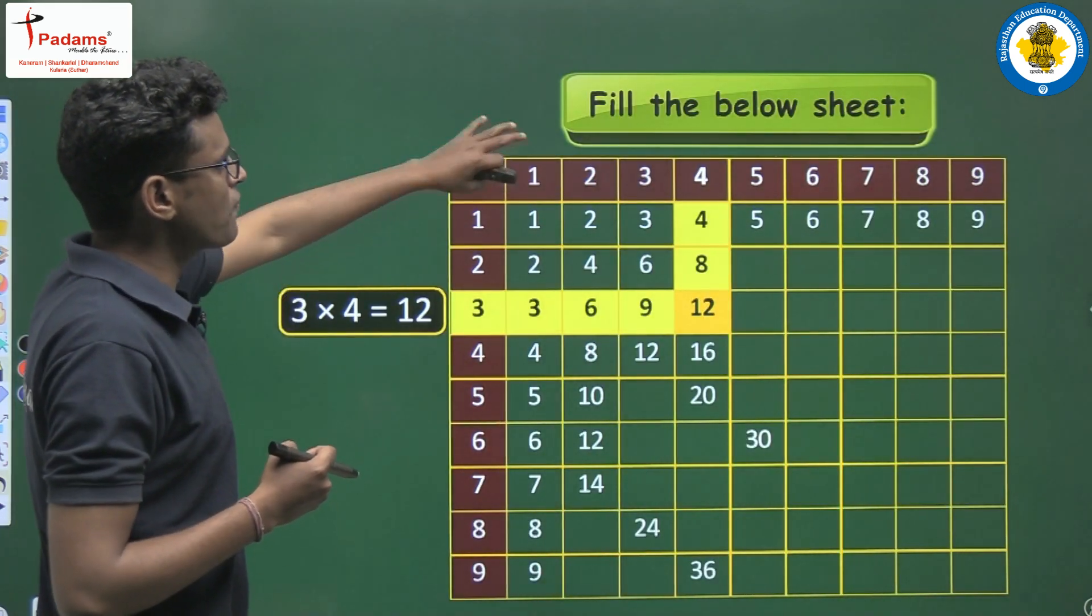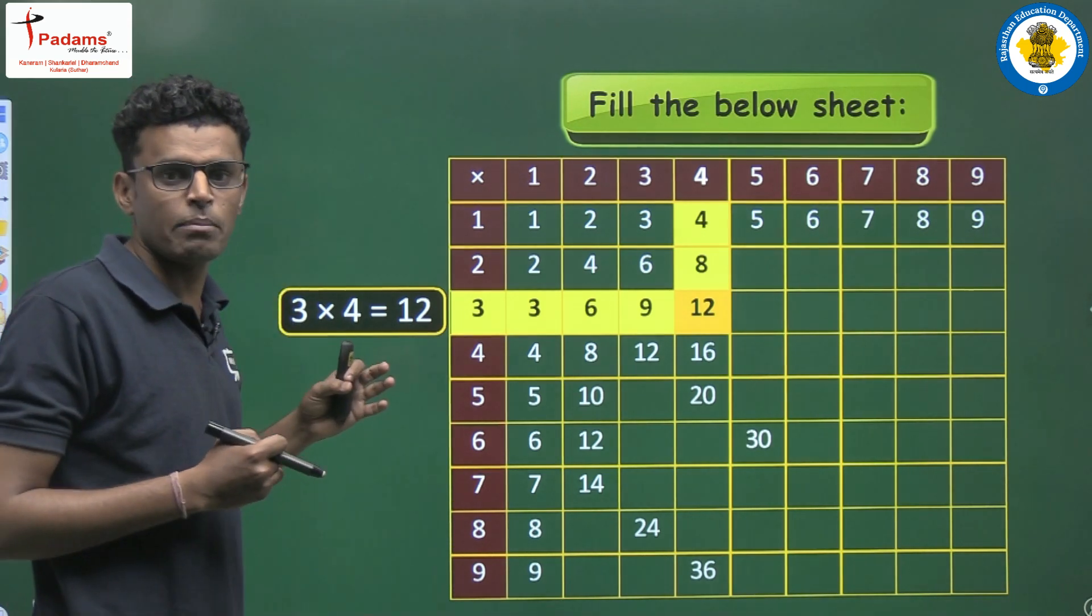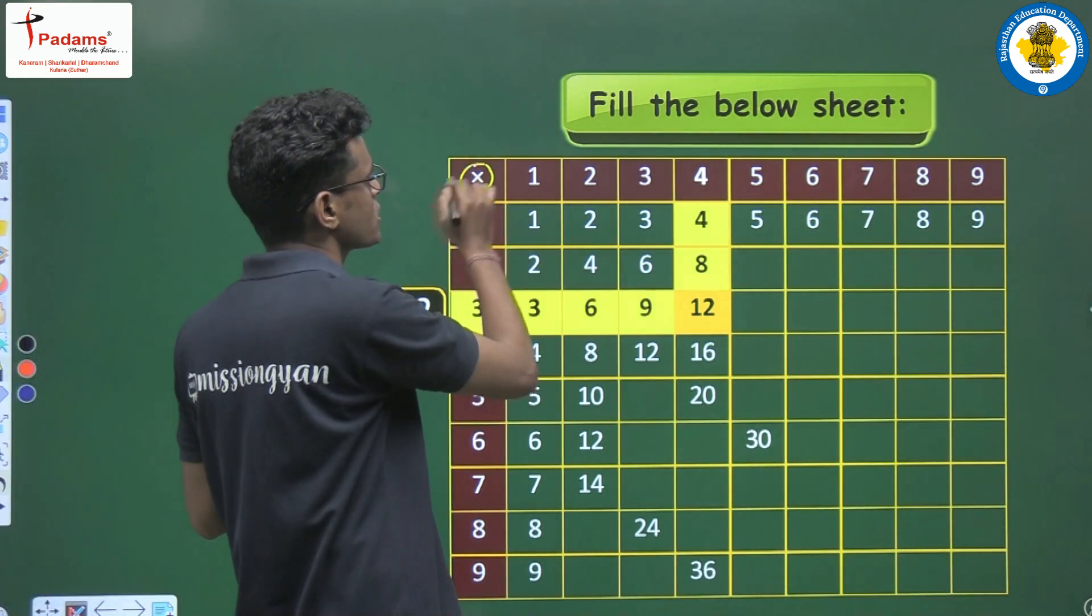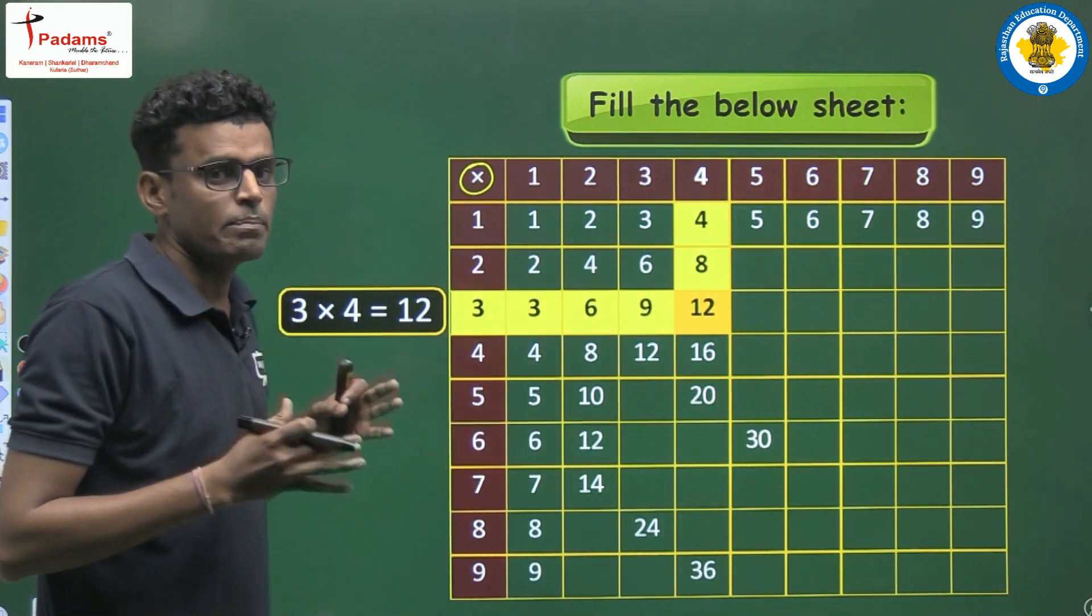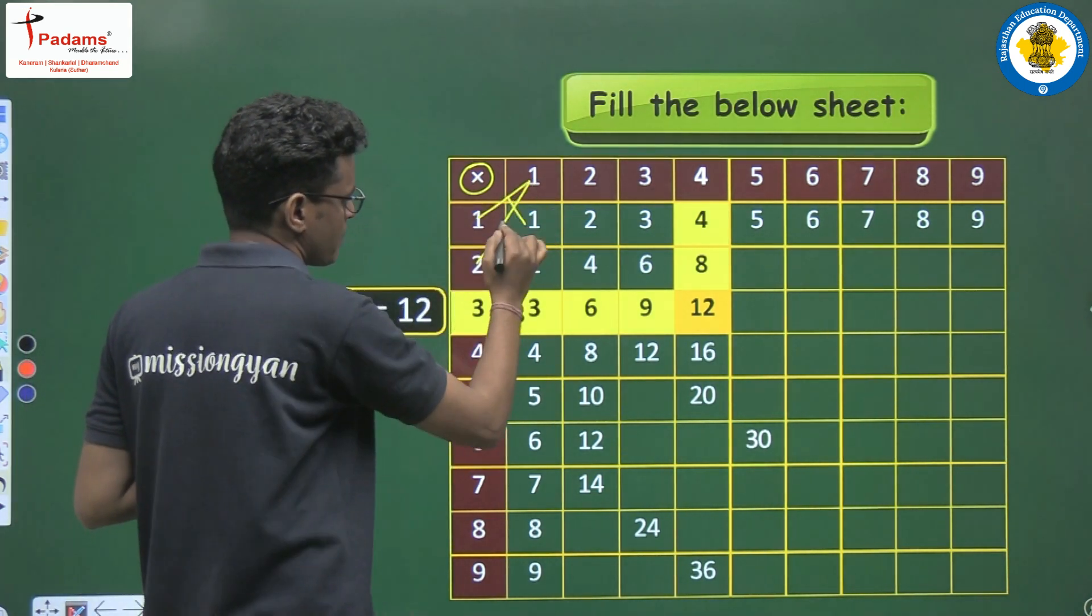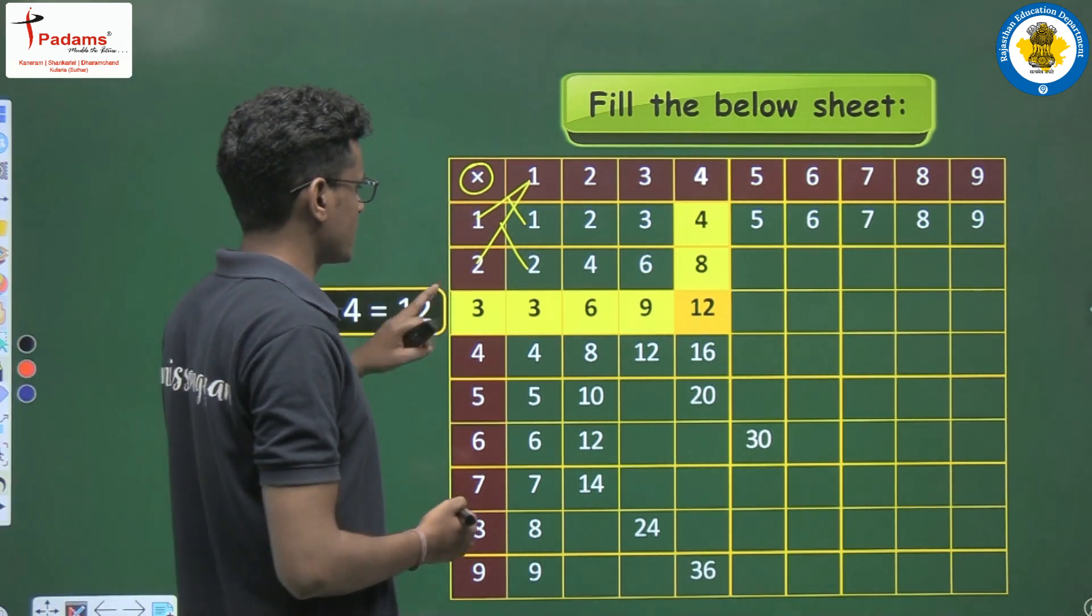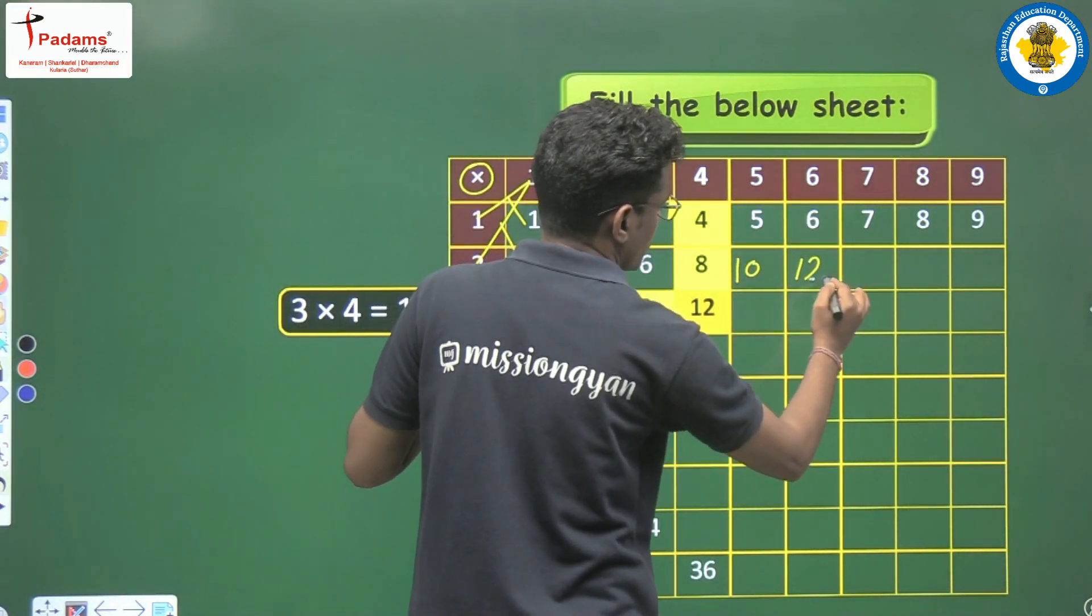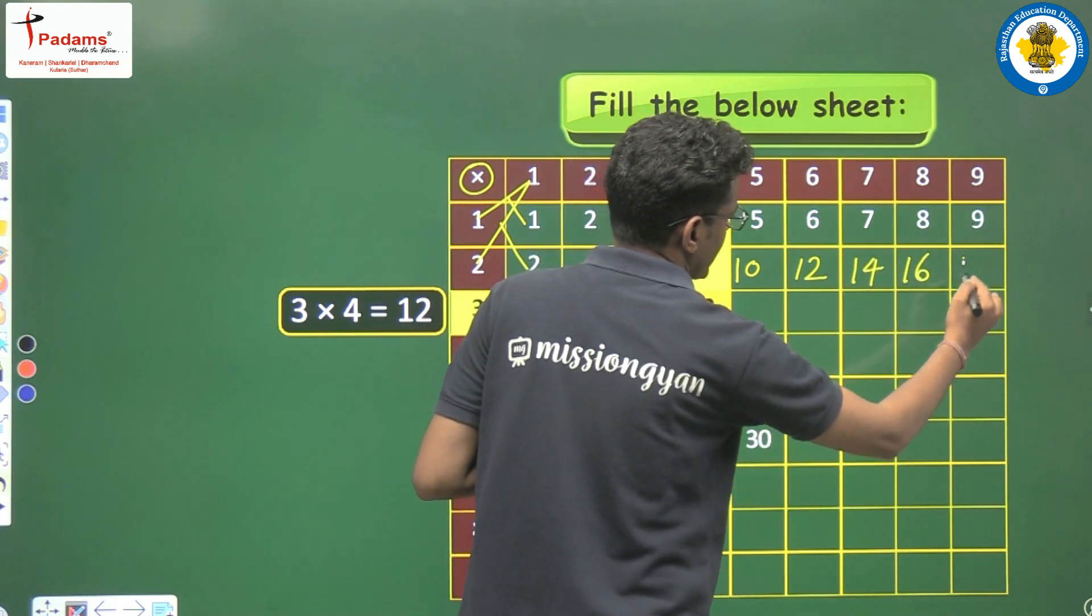So look, first we have a question, fill the blue sheet. We have a sheet where horizontally and vertically we can see numbers 1, 2, 3, 4, 5, 6, 7, 8, 9, up to 9. On another side you can check the multiplication sign and after that numbers 1 to 9 also. So what do we need to do here? Look, 1 multiplied by 1 equals 1, 2 multiplied by 1 equals 2. In short we can say we need to fill in the table. So let's start. 2 times 5 is 10, 2 times 6 is 12, 2 times 7 is 14, 2 times 8 is 16, 2 times 9 is 18, clear?